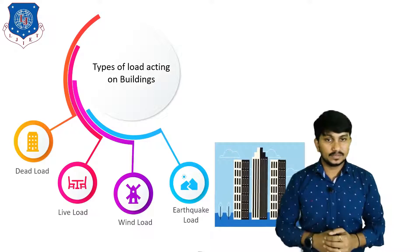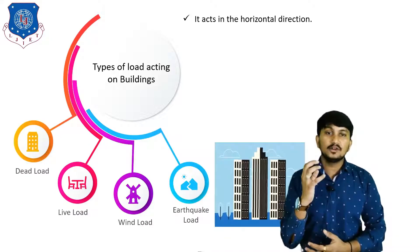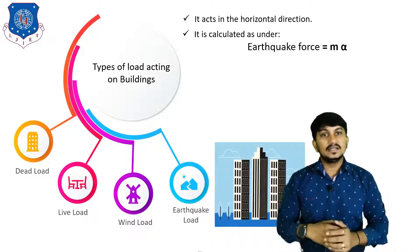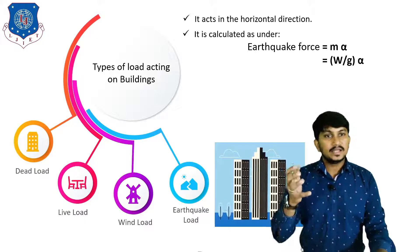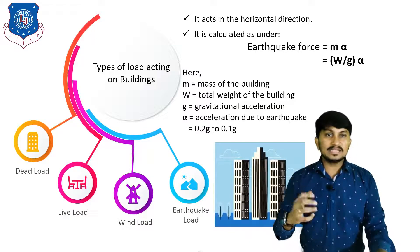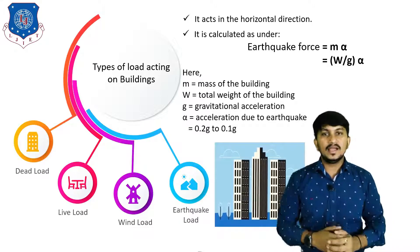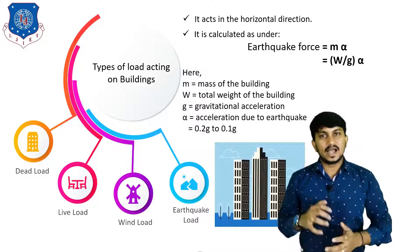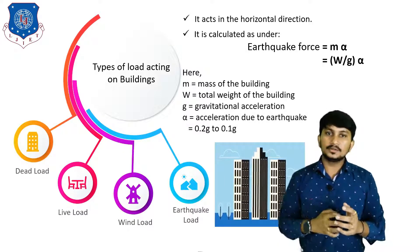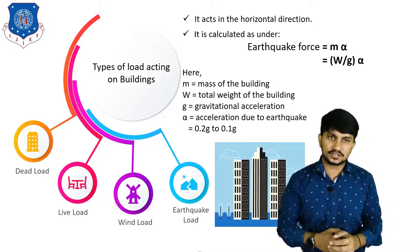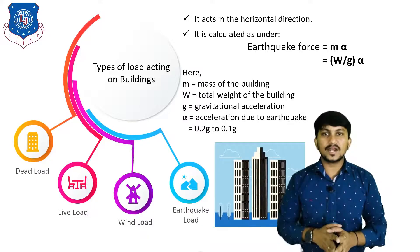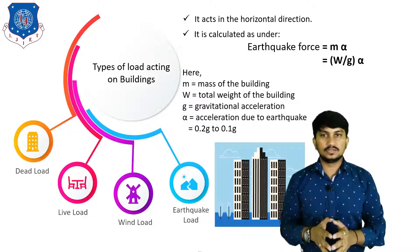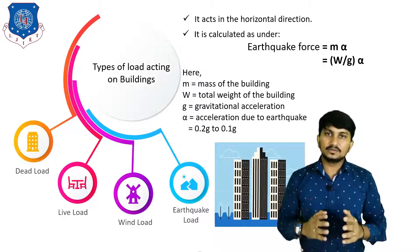The next type of load is earthquake load. It acts basically in the horizontal direction at the foundational level of the building. It is calculated by the equation: F = M × α, also expressed as (W/g) × α, where M is the mass of the building, W is the total weight of the building, g is gravitational acceleration, and α is the acceleration due to earthquake. Basically, α is given as 0.1g to 0.2g. This calculation of earthquake load is based on IS 1893, 2016 edition.